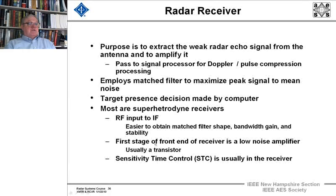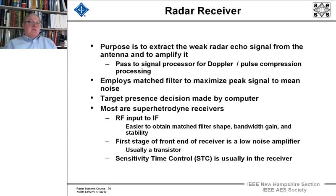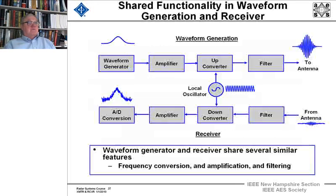The first stage — the front end of the receiver — is a low noise amplifier, usually just a transistor. We'll use sensitivity time control to control the gain on receive of the signal coming into the receiver.